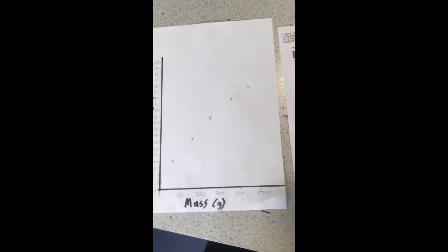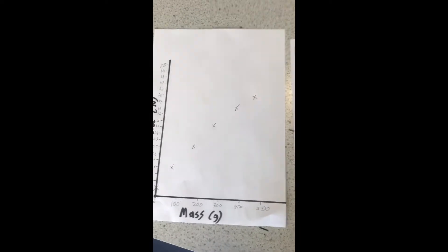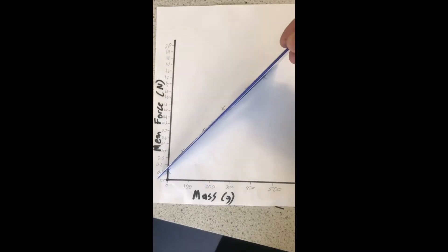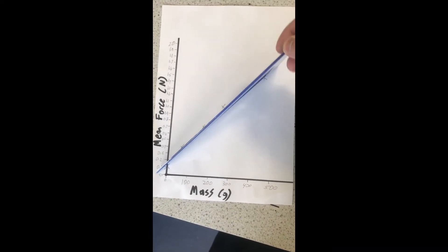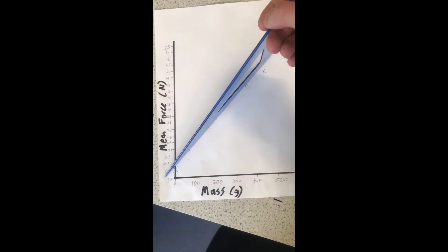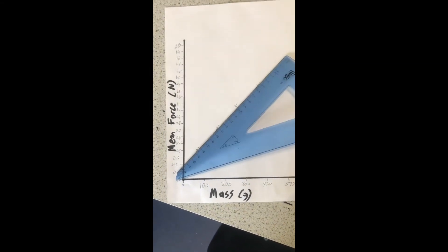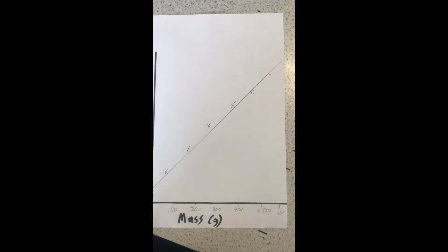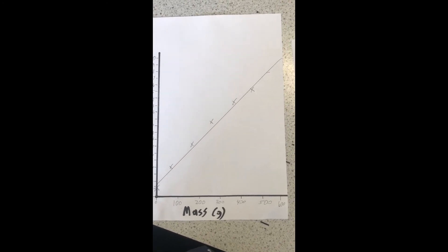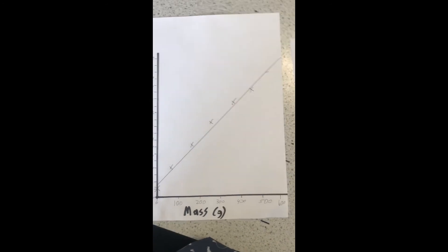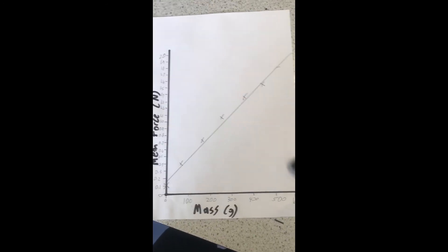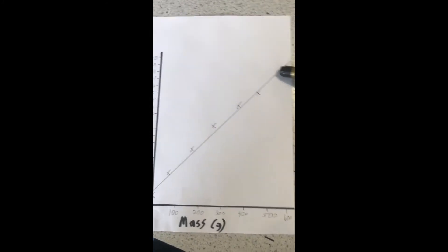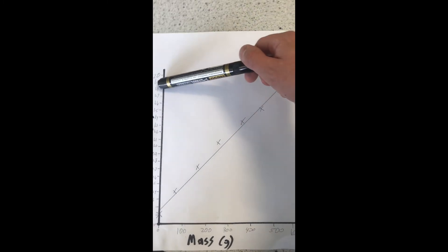Our next step is to make a line of best fit. A line of best fit shows the trend in the data and can be used to predict future points on our graph. To draw a line of best fit, I align my ruler so that about half of the points are on each side of it. I then draw my line of best fit using the ruler. The line of best fit can be used to predict future trends. So as we can see, if we wanted to know what the force would be at the mass of 600 grams, we can use the line of best fit to predict that. So at a mass of 600 grams, the line of best fit shows it'll be approximately 1.85 Newtons.